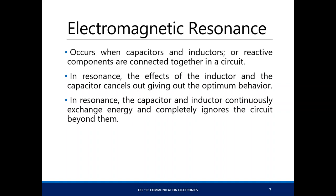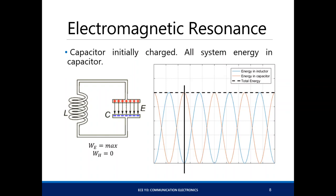Electromagnetic resonance occurs when you have a capacitor and inductor transferring energy from one another. Assuming we have an inductor connected to a capacitor, and the capacitor is fully charged with voltage V, this will drive current into the inductor.